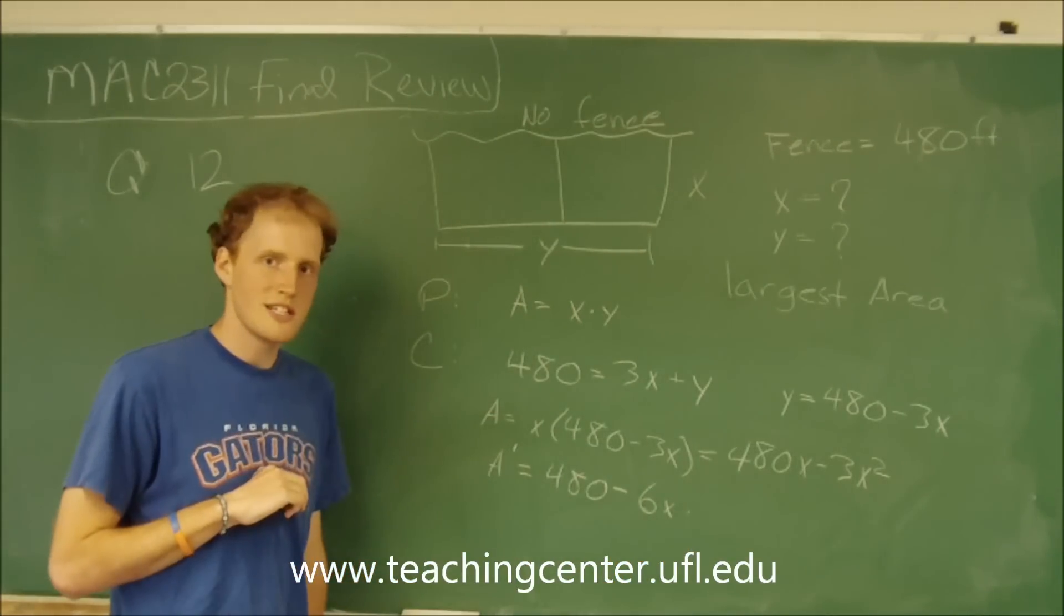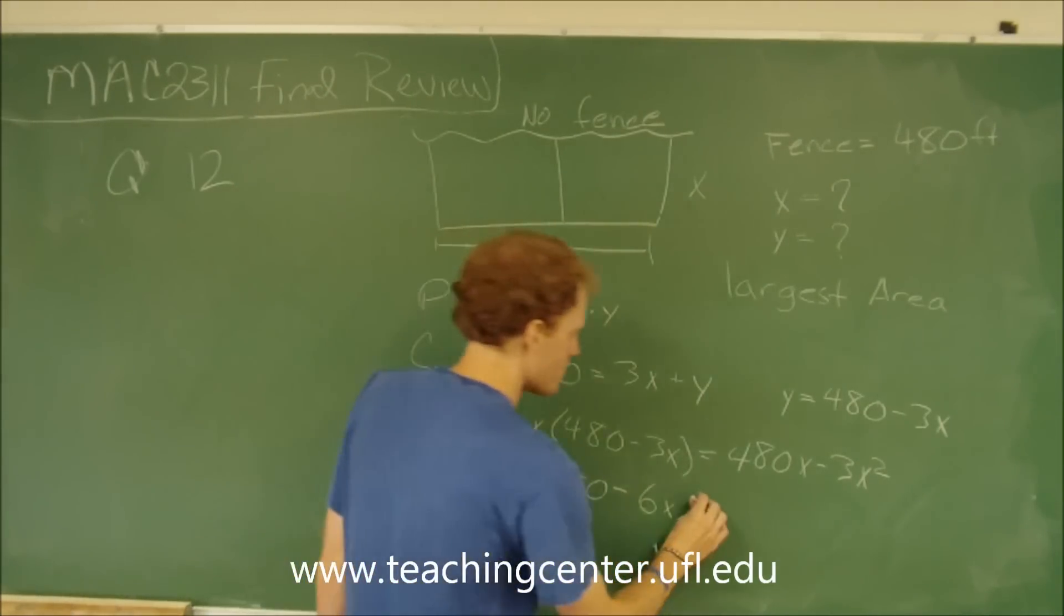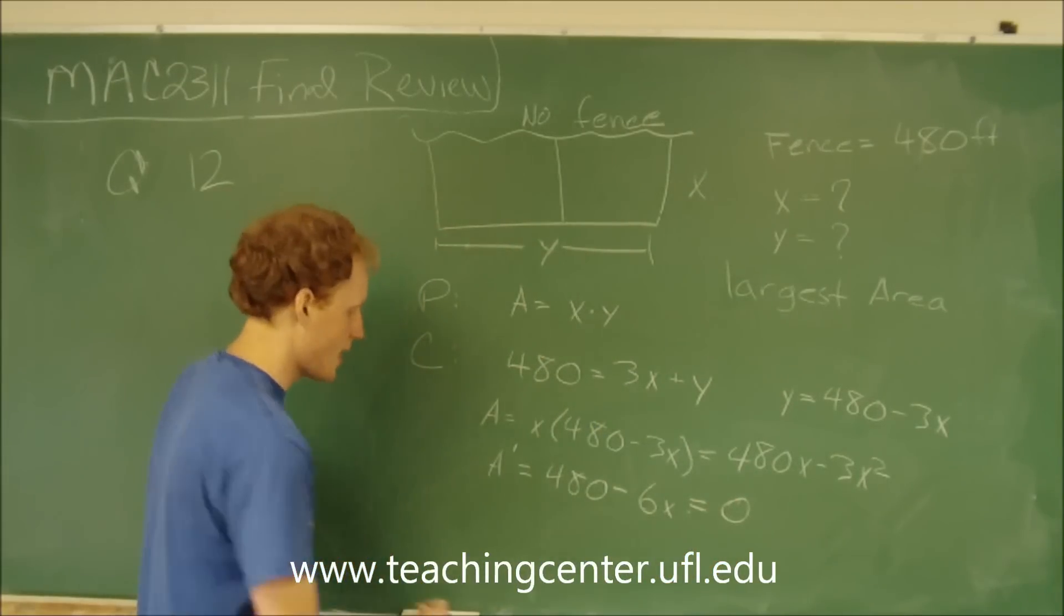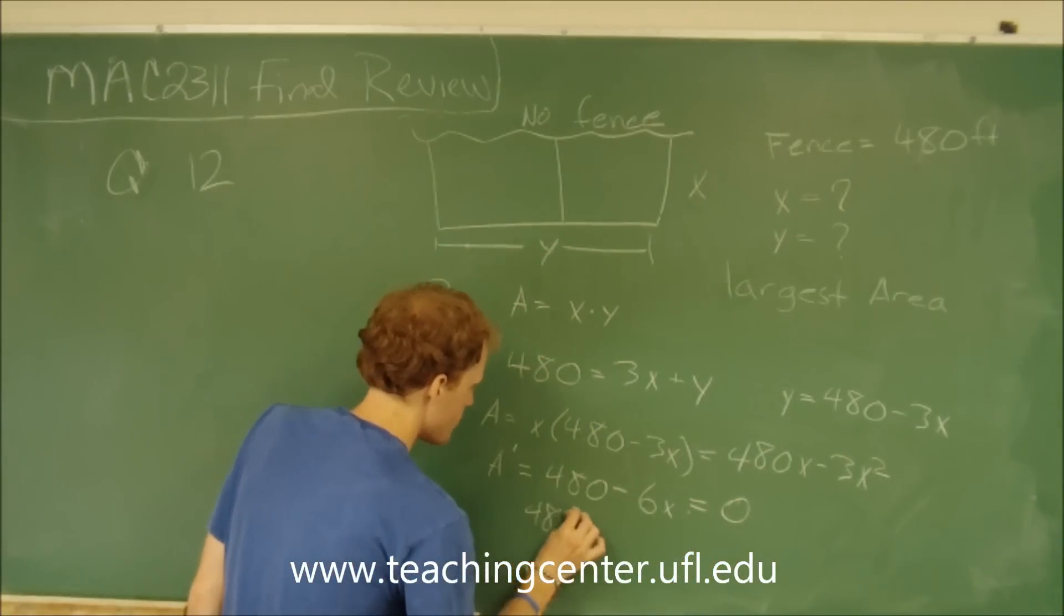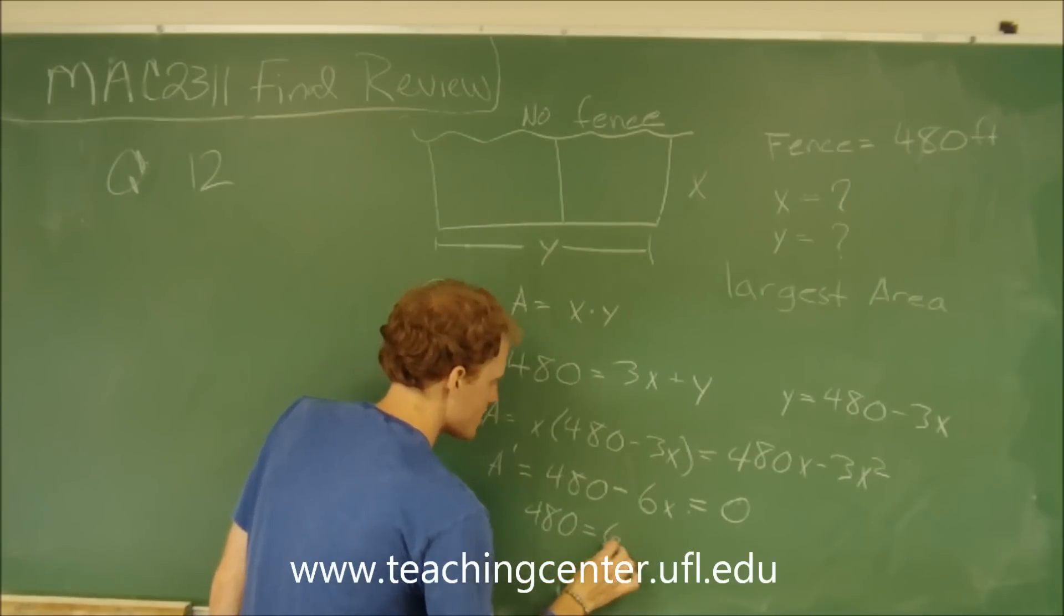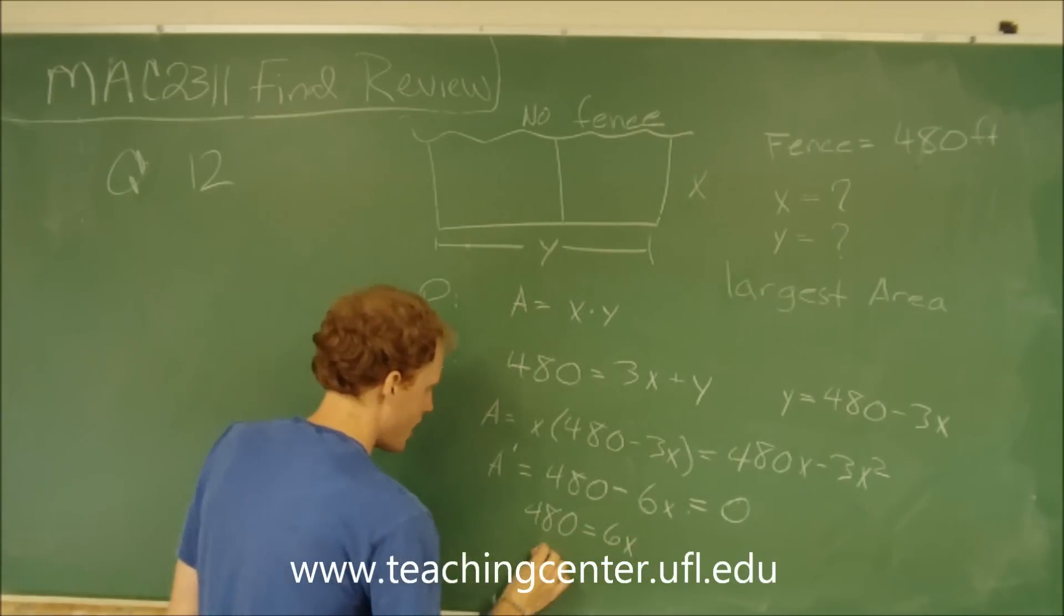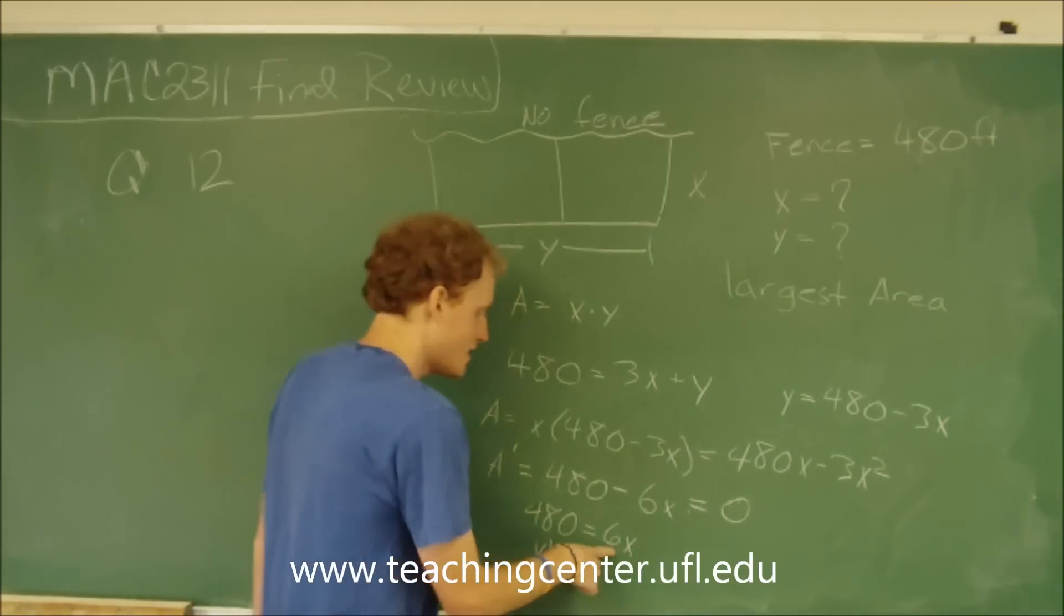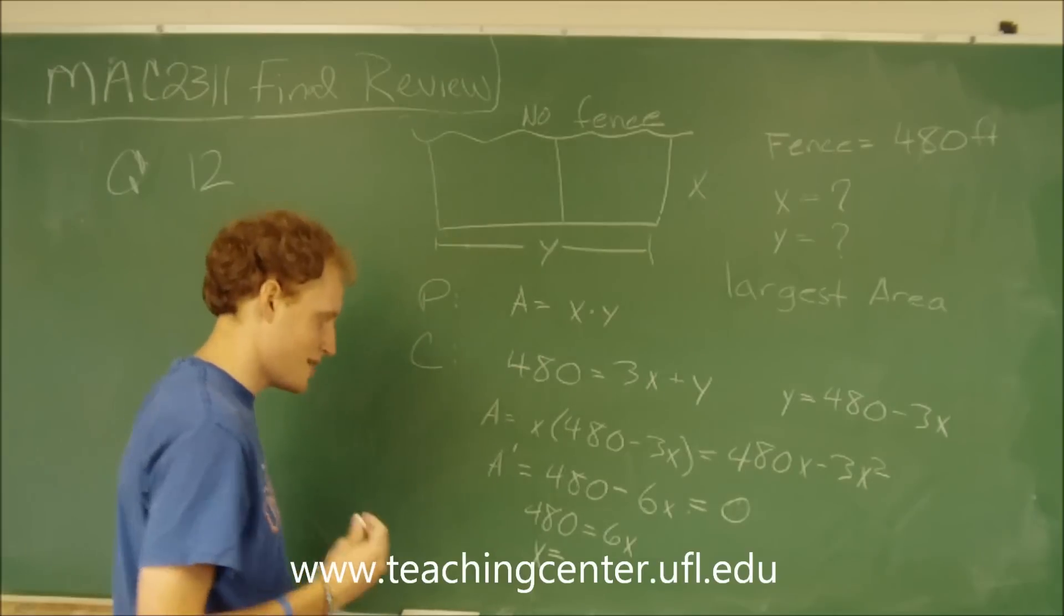So now we just set the derivative equal to zero. So we're going to get 480 equals 6x. So x is going to equal 480 divided by 6, which is 80.